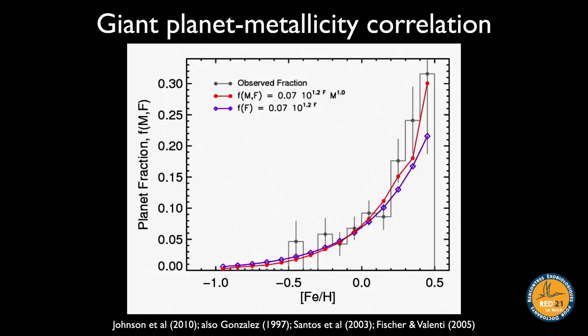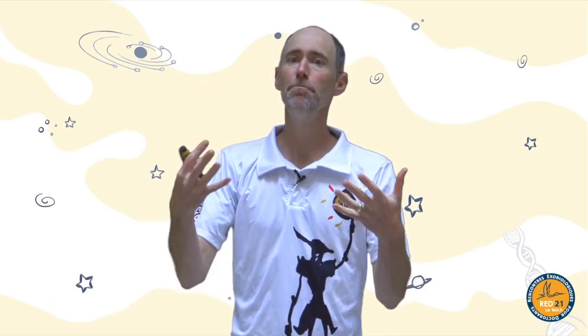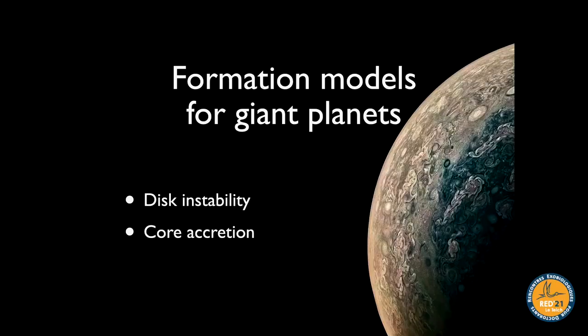Another constraint is the giant planet–metallicity correlation, one of the first correlations found for exoplanets. The x-axis is stellar metallicity calibrated to iron, and the fraction of stars with giant planets increases steeply with metallicity. Having more metals — perhaps more material to build planetesimals — helps form giant planets.